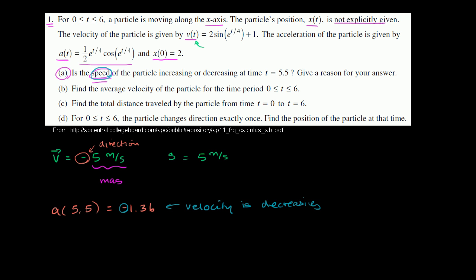There are two scenarios. If the velocity is positive at t = 5.5, then a negative acceleration means both velocity and speed are decreasing. On the other hand, if the velocity is negative at t = 5.5, then the fact that it's decreasing means it's getting even more negative — and that means the speed is increasing, because the magnitude is increasing in the leftward direction. So beyond evaluating the acceleration, we also need to evaluate the velocity to see which direction the particle is moving.